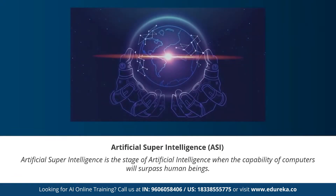Moving on to our last stage: artificial super intelligence. This is the stage of AI when the capability of computers will surpass human beings. Artificial super intelligence is currently seen as a hypothetical situation, as depicted in movies and science fiction — machines taking over the world. Such systems don't currently exist, and we don't have any machine capable of thinking or reasoning better than a human being. Artificial super intelligence refers to any entity that is much smarter than humans.